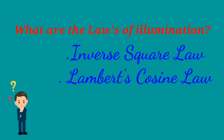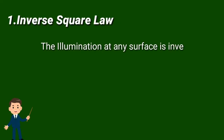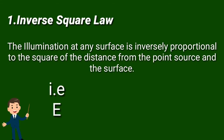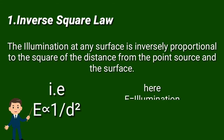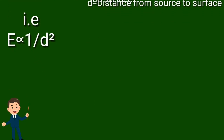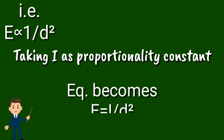Inverse square law: The illumination at any surface is inversely proportional to the square of the distance from the point source to the surface. E is inversely proportional to D square. Taking I as the proportionality constant, the total equation becomes E equal to I by D square.